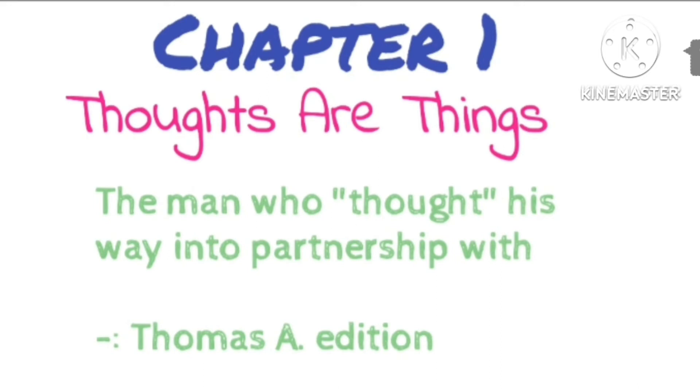Observe very closely: as soon as you master the principles of this philosophy and begin to follow the instructions for applying those principles, your financial status will begin to improve and everything you touch will begin to transmute itself into an asset for your benefit. Impossible? Not at all. One of the main weaknesses of mankind is the average man's familiarity with the word 'impossible.' He knows all the rules which will not work. He knows all the things which cannot be done. This book was written for those who seek the rules which have made others successful and are willing to stake everything on those rules.